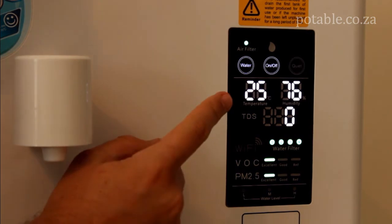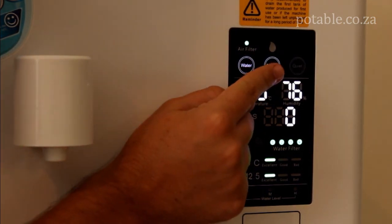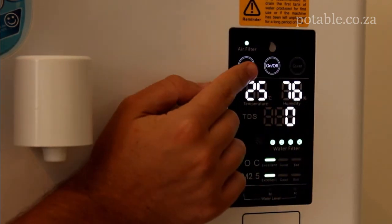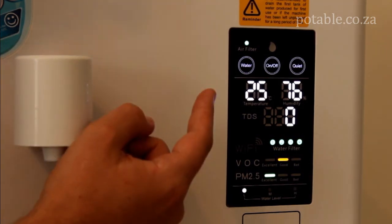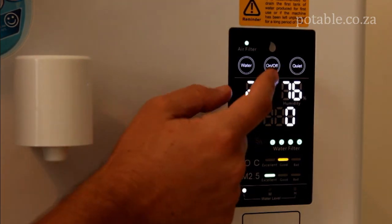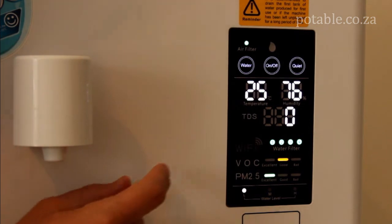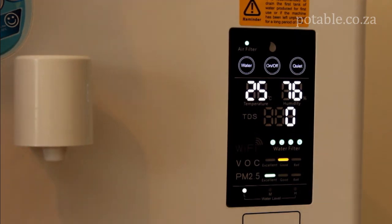Over here you will notice that there is a water switch, an on and off switch and a quiet switch. The water switch releases the water from the dispenser and if you press it again it stops the release of water. The on and off switch naturally turns the machine on and off.